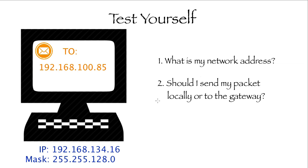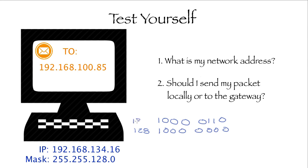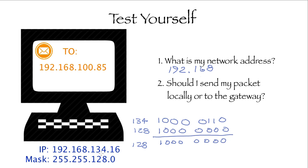Let's check the answers. Your IP address is given. When you AND the third octet — 134 in binary is 10000110 and 128 is 10000000 — ANDing those gives 128. So your network address is 192.168.128.0.